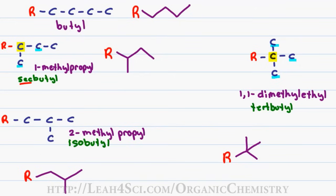Many students confuse the isobutyl with the sec-butyl, so here's a trick. Comparing the isobutyl to the isopropyl, notice that both the isopropyl and the isobutyl have the branch chain at the end — that's how you recognize the iso group.